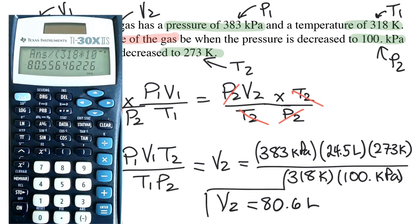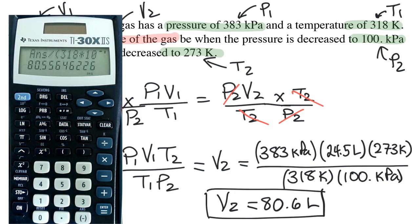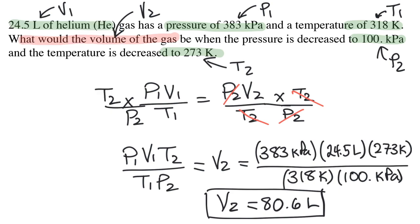I'm going to round my answer to three digits because each of the given variables had three significant digits. And so the answer is 80.6. And the unit is liters because liters is the unit for volume.